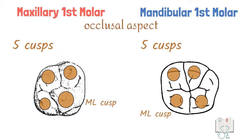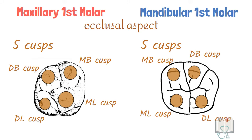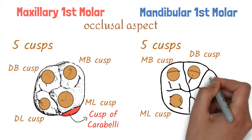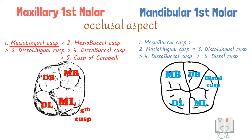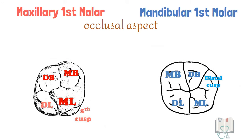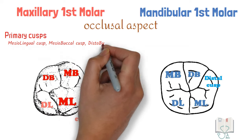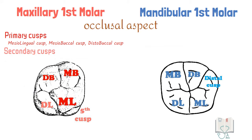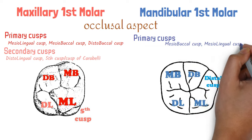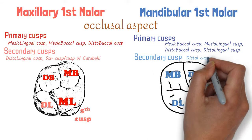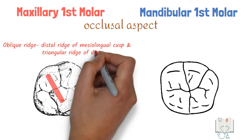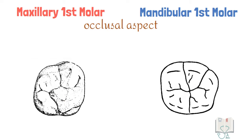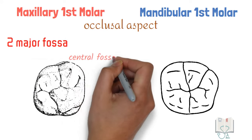Both molars have five cusps. Mesolingual cusp, mesiobuccal cusp, distobuccal cusp, and distolingual cusp are the same in both. Then in maxillary first molar the last cusp is the cusp of Carabelli, whereas in mandibular first molar it is the distal cusp. In maxillary first molar the largest cusp is the mesolingual cusp, whereas in mandibular first molar it is the mesiobuccal cusp. In maxillary first molar there are three primary cusps — mesolingual, mesiobuccal, and distobuccal — and two secondary cusps — distolingual and cusp of Carabelli. Maxillary first molar has a ridge running between the mesolingual cusp and distobuccal cusp called the oblique ridge; no such ridge is present in mandibular first molar.